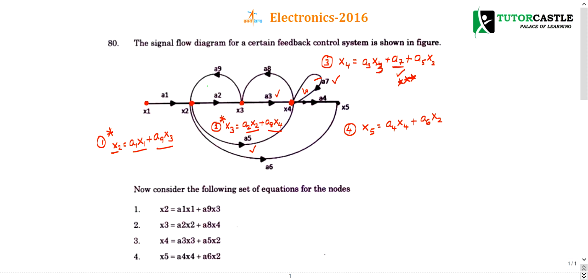Then one more node is from a5. a5 is coming from node x2: a5x2. This is a simple way of writing x4.